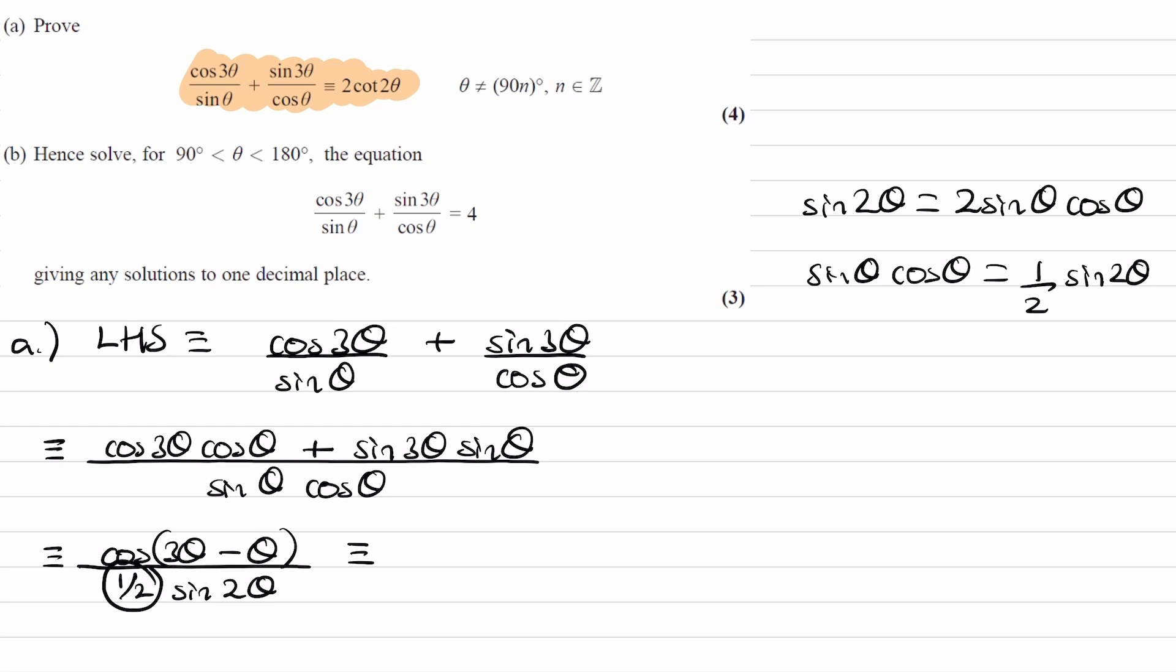So, the 1 over half becomes 2. So, this is 2 cos 2 theta. That's cos 2 theta. So, this is cos theta over sin 2 theta, which is then 2 cot, cot is 1 over tan, which is our right-hand side.